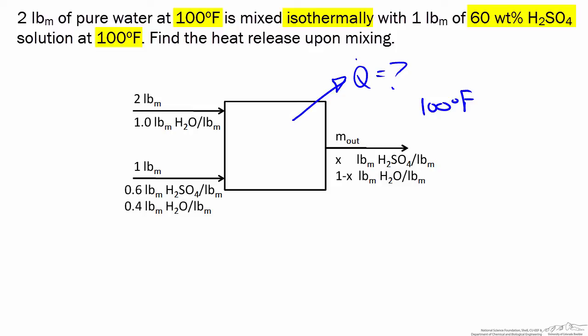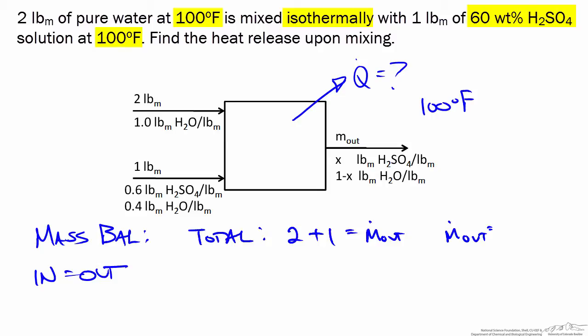We'll need an energy balance, but before we get there we need to find the mass and concentration for the mixture, and for that we can use mass balances. Mass is conserved, and if there's no accumulation in the mixing unit, the mass balances have the form: in equals out. Using a total mass balance, the mass going into the mixing unit is 2 pounds plus 1 pound, so m-out must equal 3 pounds.